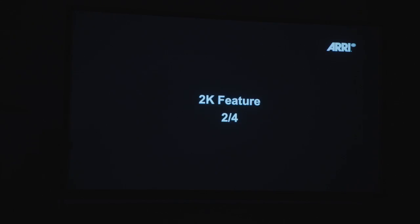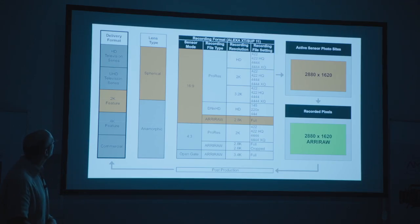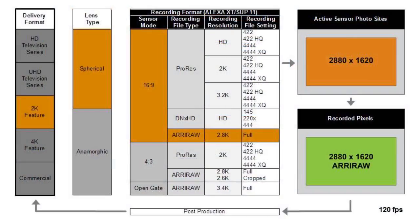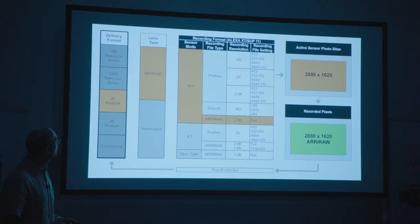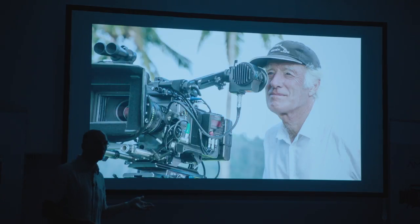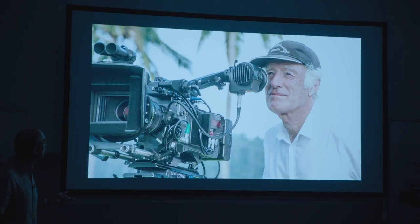Moving to 2K features — the most common workflow is shooting spherical lenses, 16x9, ARRI RAW 2.8K. This uses 2880x1620 photosites on the sensor and records a 2080x1620 ARRI RAW file, which is then debayered in post-production. This is how most feature films are being shot right now — Roger Deakins shot Skyfall this way, and I believe he shot Unbroken the same way.